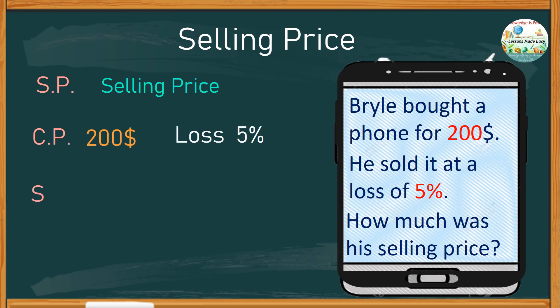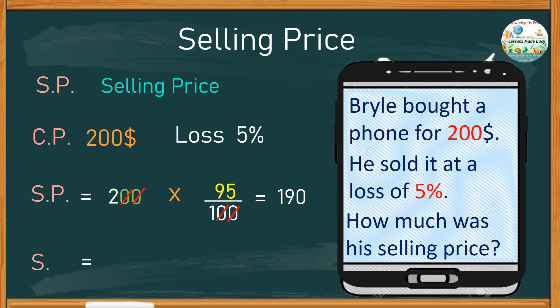To find the selling price, we take the cost price of 200 multiplied by the loss factor. Since it's a 5 percent loss, we subtract 5 from 100, giving us 95 over 100. We can simplify by canceling the two zeros above and the two zeros below. Now we have 2 times 95, which is 190.